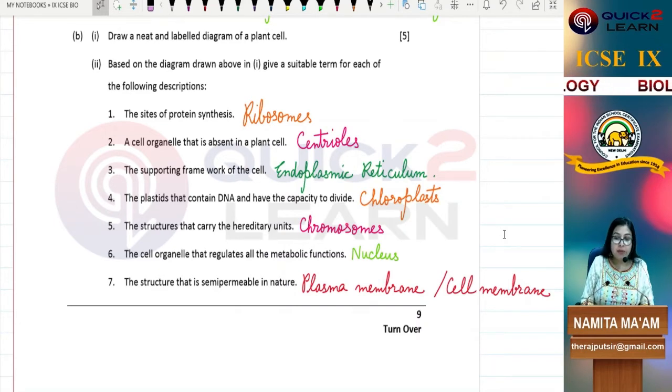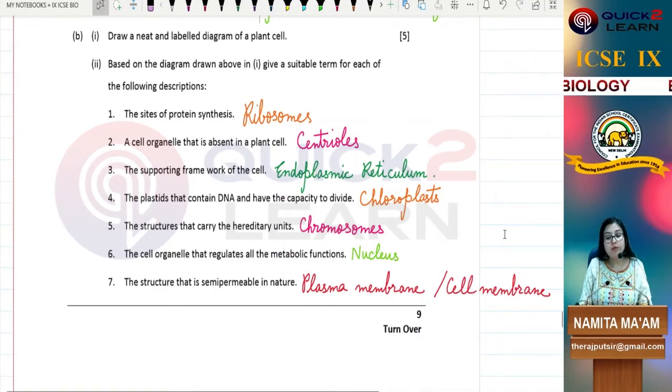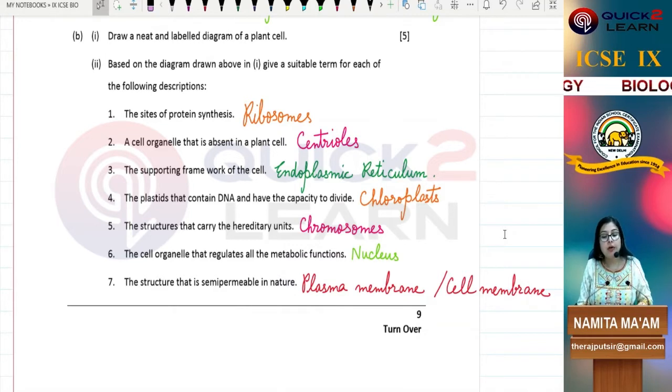Plant cell diagram. Then, based on the diagram drawn above, give a suitable term for each of the following descriptions. Which organelle suits the description.